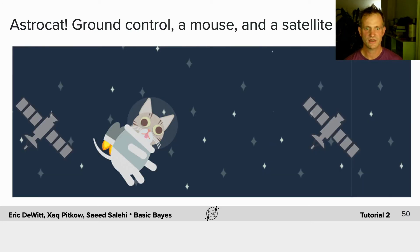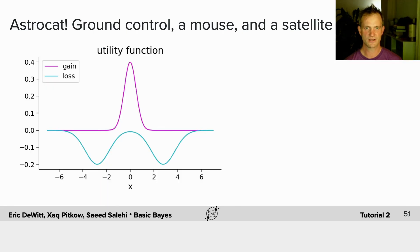And we're going to consider AstroCat floating around in space. AstroCat, of course, wants to avoid hitting the satellites and it wants to be near SpaceMouse. So that means the utility function has one gain location and two loss locations.